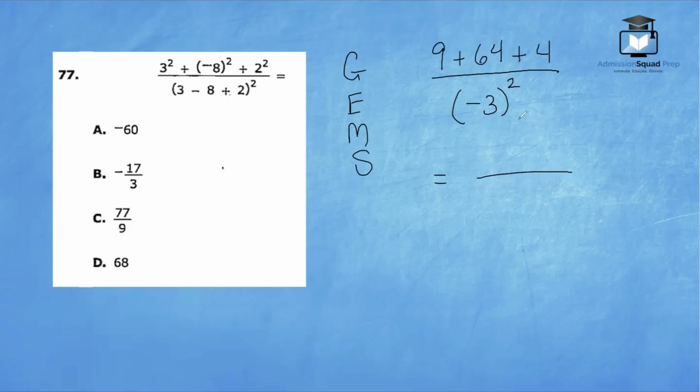Our numerator is now 77, because 9 plus 64 is 73, and 73 plus 4 is 77, and our denominator is negative 3 to the second power, which is 9. So the correct answer is choice C.